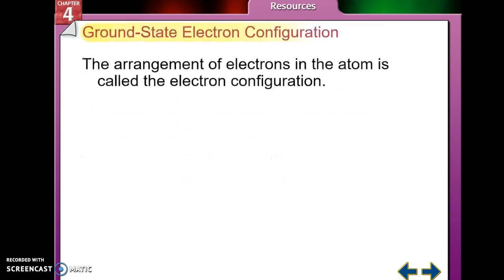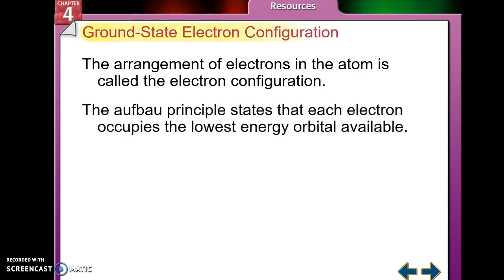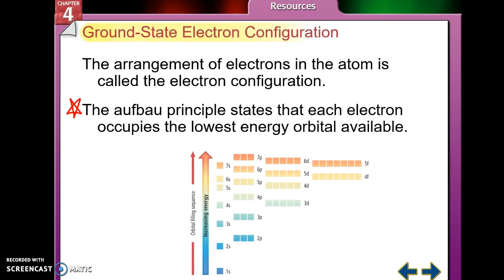We use that information to write what's called an electron configuration — the arrangement of electrons in the atom. When writing electron configurations, we use the Aufbau principle, which states that each electron occupies the lowest energy orbital available. The electrons go where they have to do the least amount of work, filling as low as possible. All electrons really want to be in the 1s orbital because it has the lowest energy — they'd rather be there than in the 7p orbital.